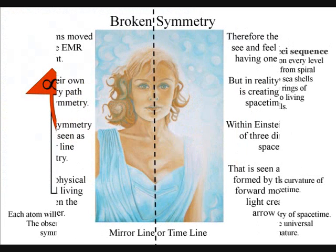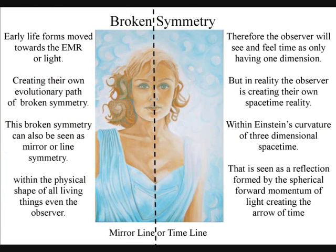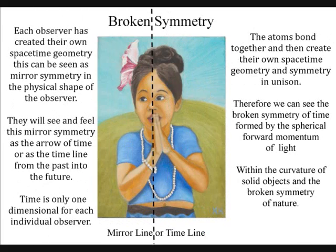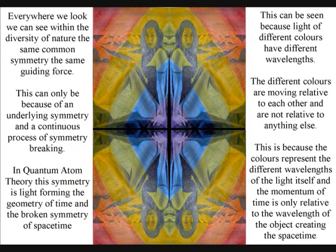Even the observer has created their own spacetime geometry, which can be seen as mirror or line symmetry in the physical shape of the observer. We will see and feel this line symmetry as the arrow of time, or as the timeline pointing from the past into the future. Therefore, the observer will feel time as only having one dimension, but in reality the observer is creating their own symmetry and geometry in three-dimensional spacetime.